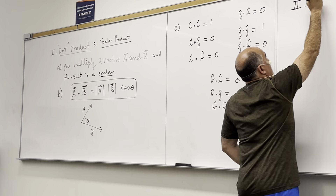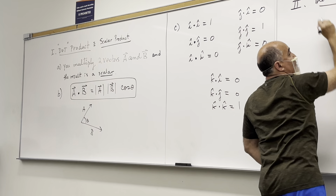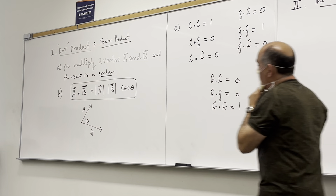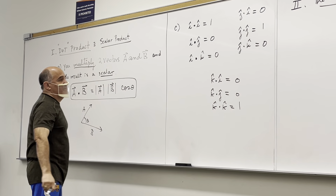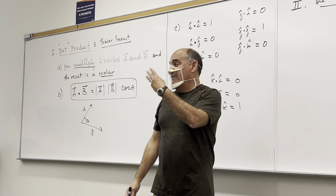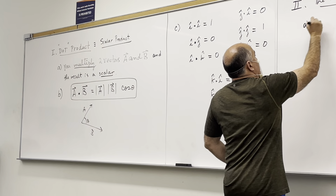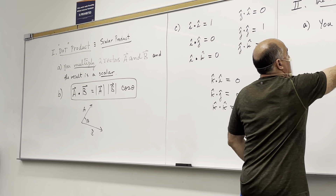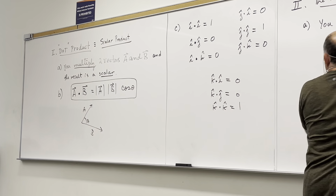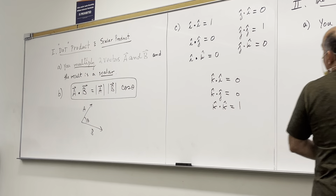Number 2: the cross product. Here, you also multiply two vectors — that's what we did with the dot product too — but the difference is that now the result is a vector. In fact, it's a third vector. You multiply two vectors, vector a and vector b, and you get a third vector.